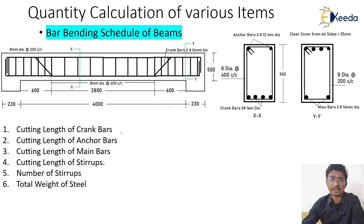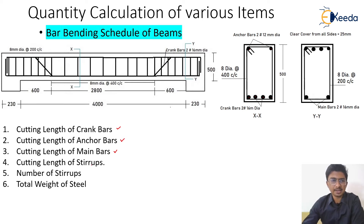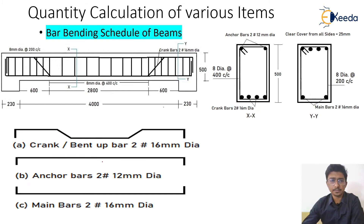We need to calculate the cutting length of the main bar, crank bar, and anchor bars. The numbers are already provided: anchor bars in two numbers, main bars in two numbers, and bent-up bars also in two numbers. We also need to calculate the length of the stirrup and the number of stirrups, and ultimately the total weight of the steel.